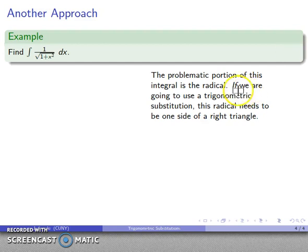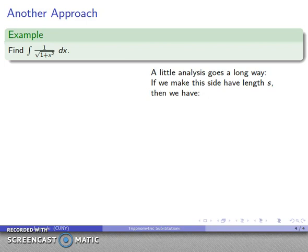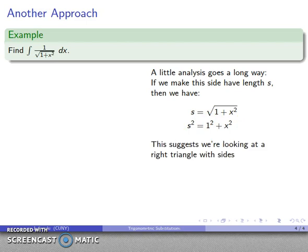If we're going to use a trigonometric substitution, then this radical is going to correspond to one side of a right triangle. So let's play around with that. A little bit of analysis is going to go a long way. If we make this side length have length s, then one side of the right triangle looks like this. And if I square both sides to get rid of the radical, then I end up with s squared equals 1 plus x squared. And this looks an awful lot like the Pythagorean theorem.